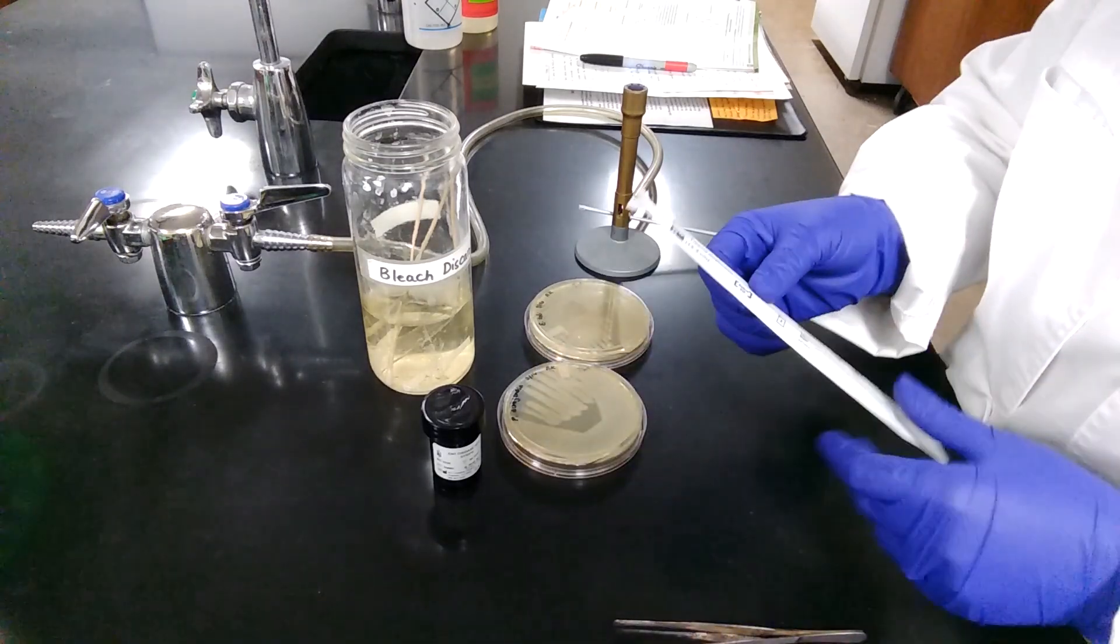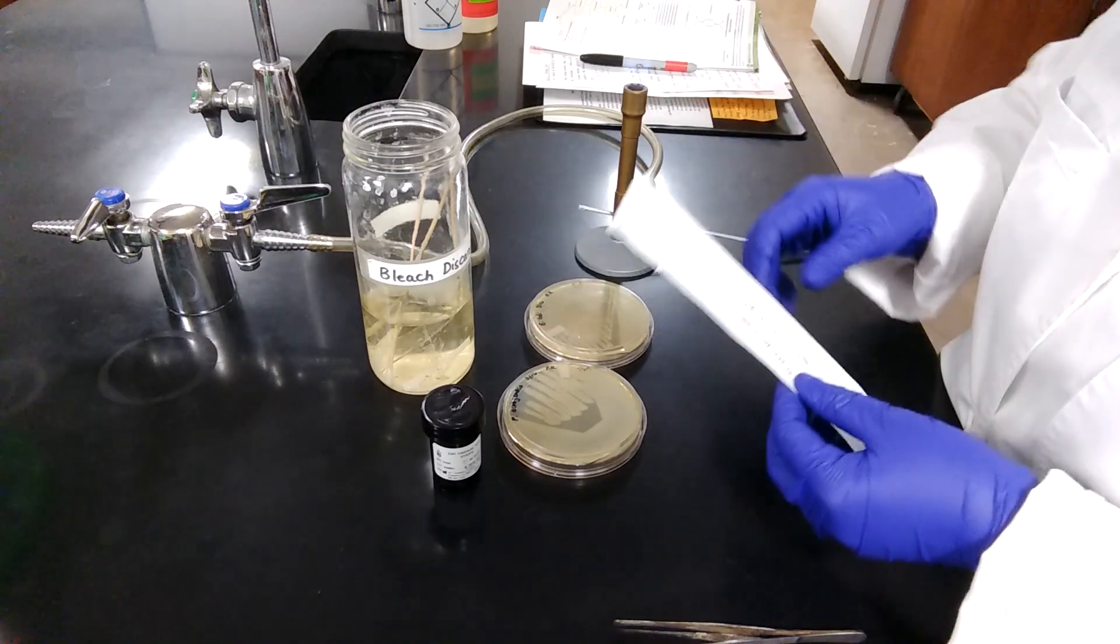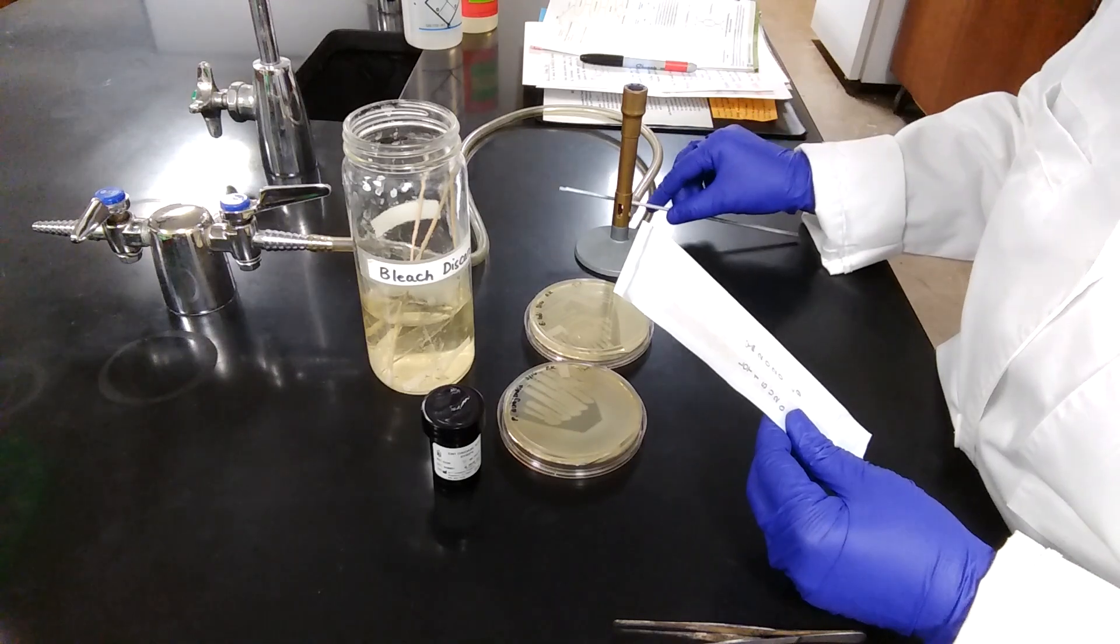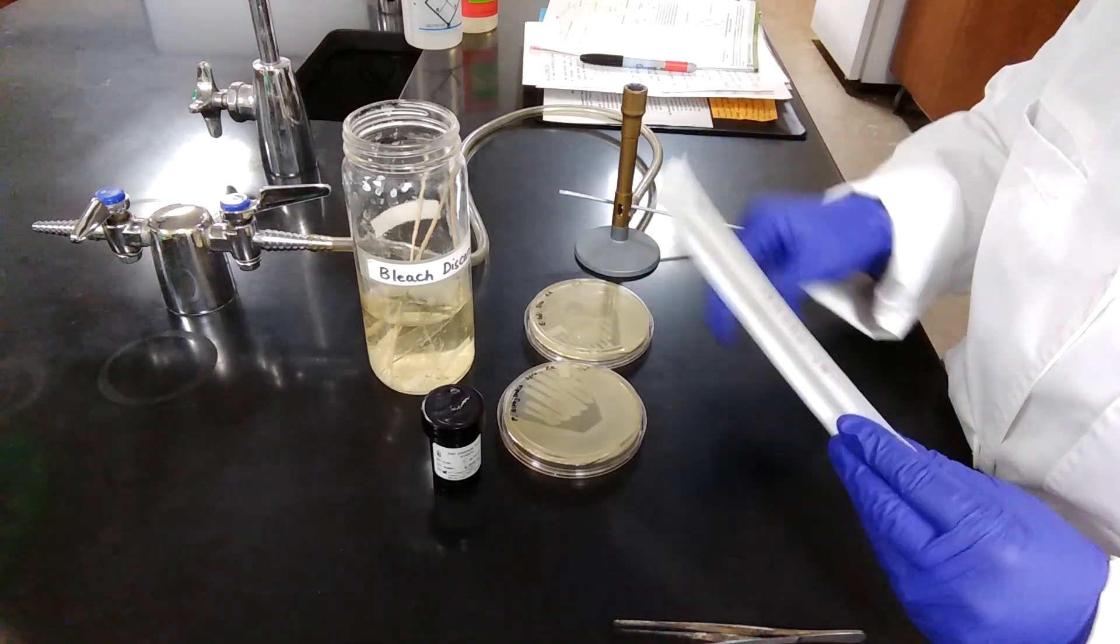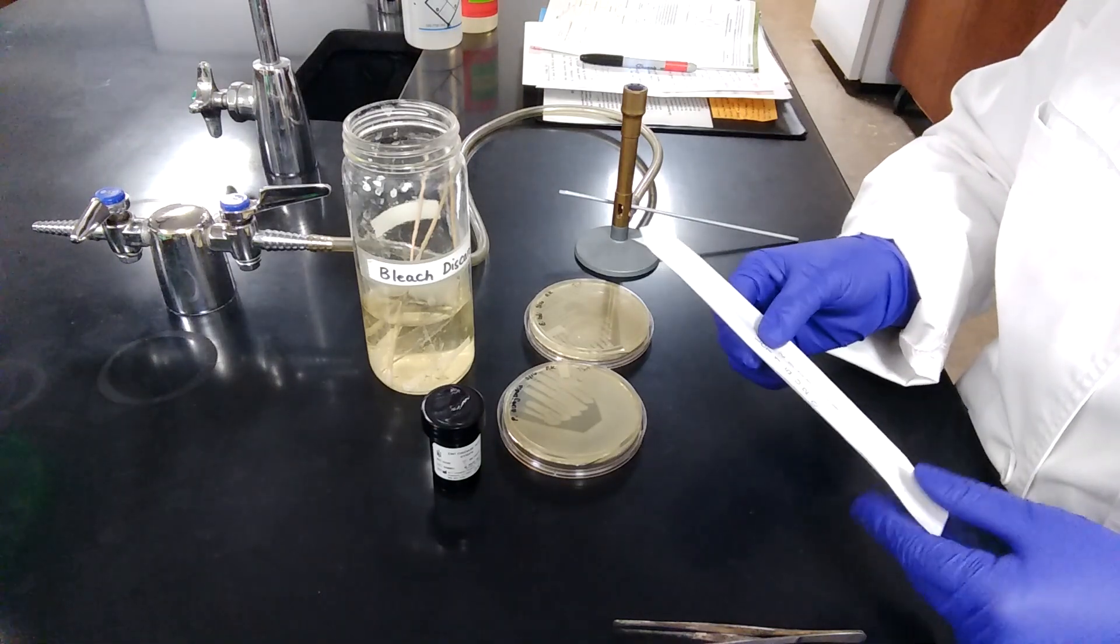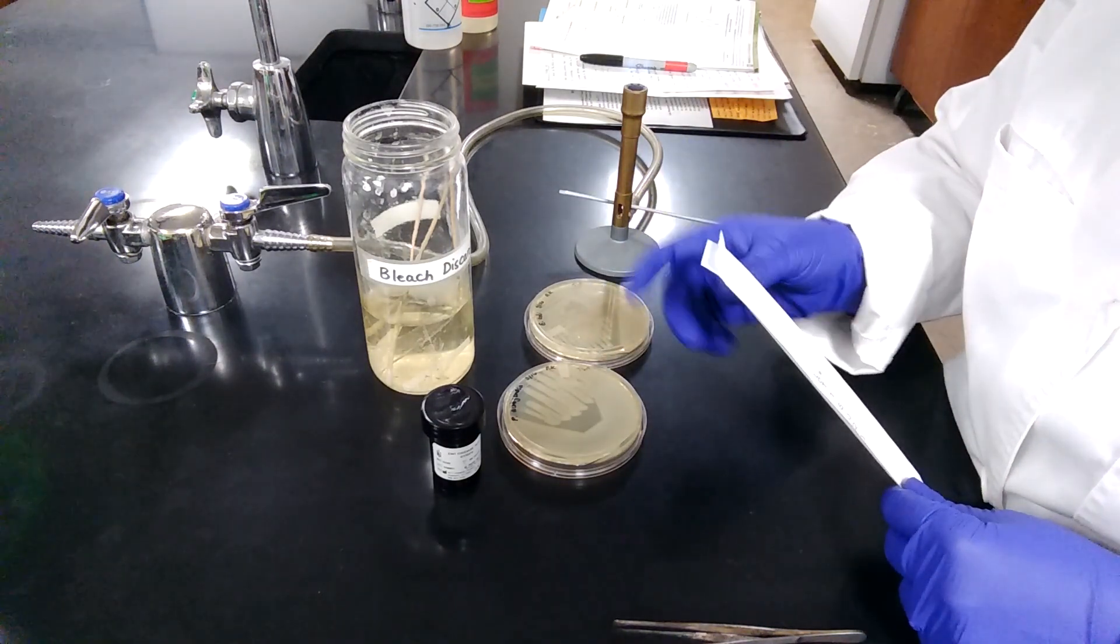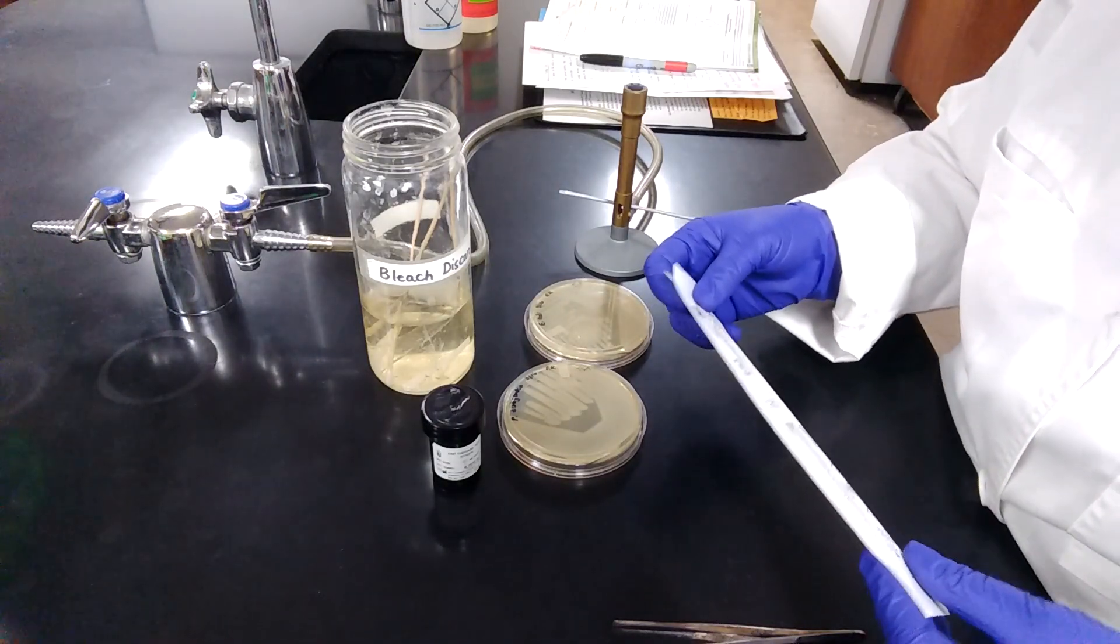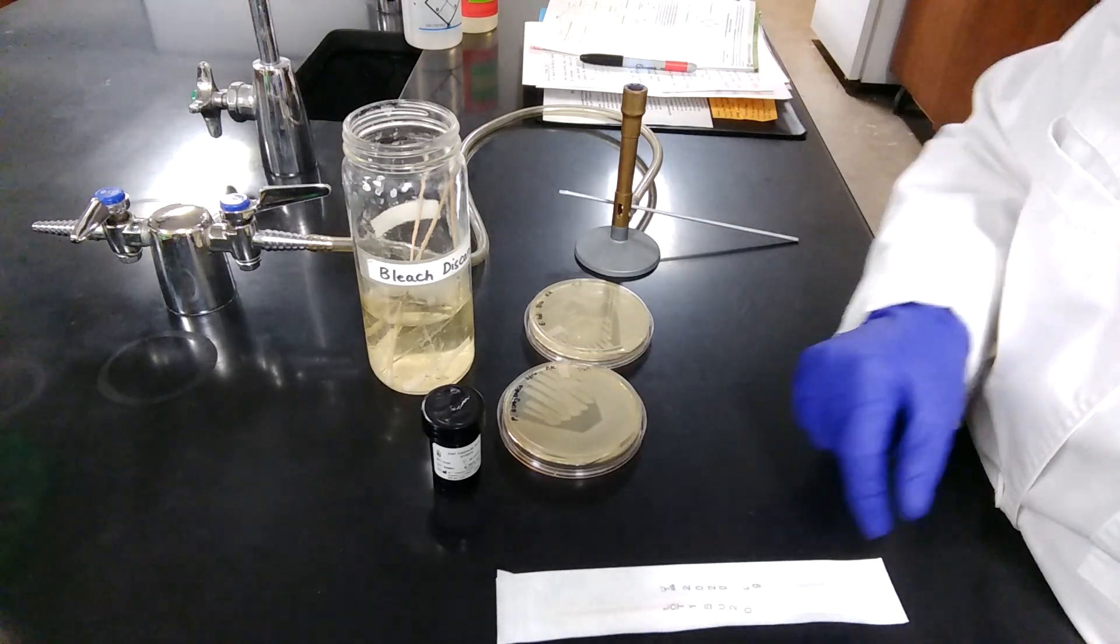We also need sterile cotton swabs to conduct this experiment. One important thing about this experiment is that you should not be using the metal inoculating loop to transfer the bacteria onto the paper strip because the metal of the loop can react with the oxidase test reagent and oxidize the reagent, giving a false positive result. So to avoid the false positive result, we are using cotton swabs to conduct the experiment.